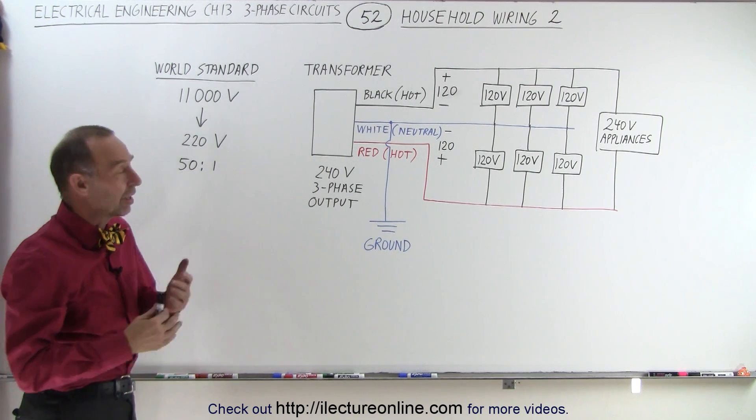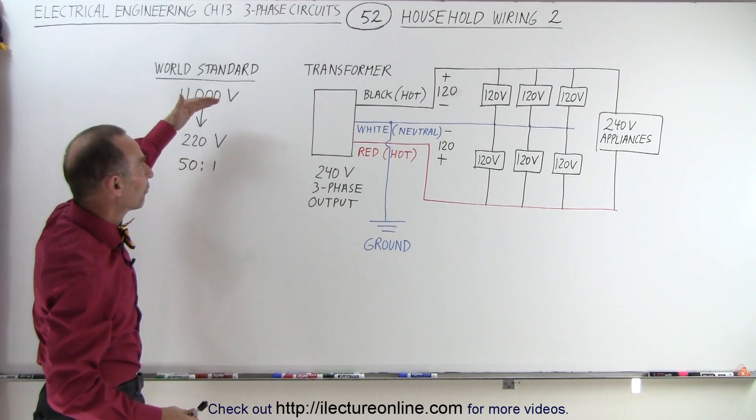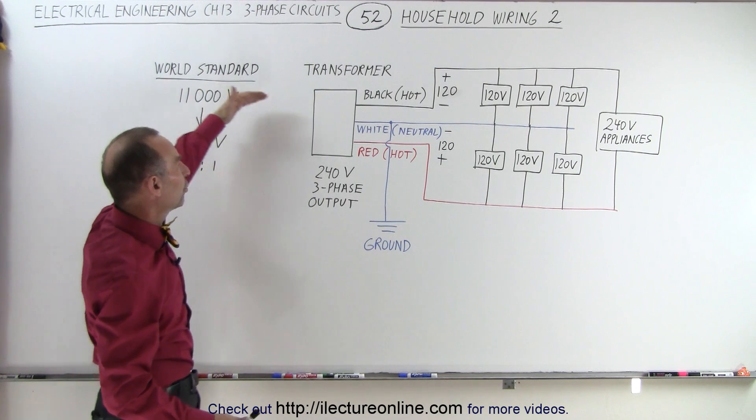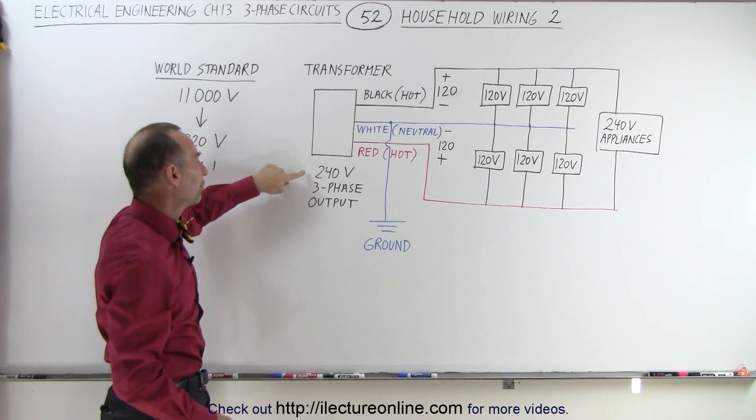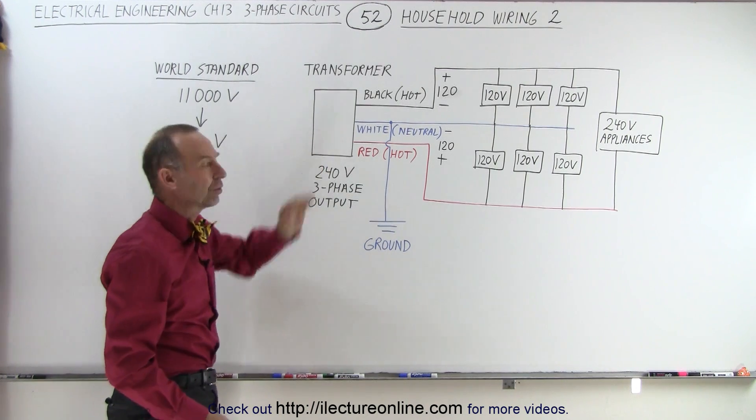In the United States there's a lot of different voltage standards for the wiring that comes to the house on the street and then finally it's transformed into a 240 volt three-phase output that goes into the house.